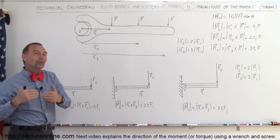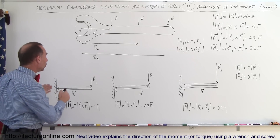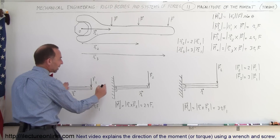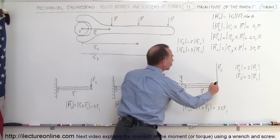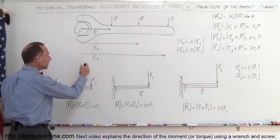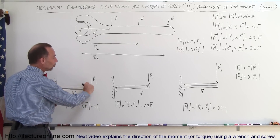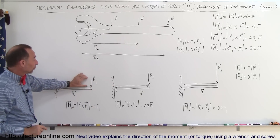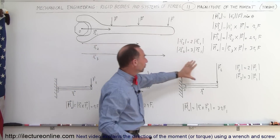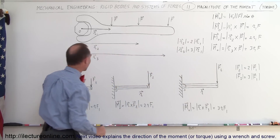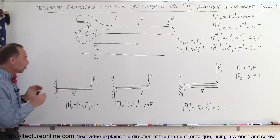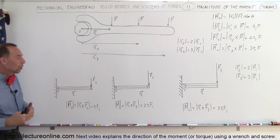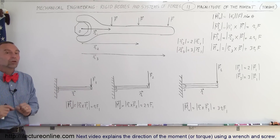Now let's talk about how the magnitude of the moment changes when we apply a greater and greater force at the very same location. In these examples, the moment arm does not change — the distance from the point of rotation to the line of action of the force does not change — and the angle in each case is 90 degrees. What does change is the magnitude of the force. The force is twice as large here, and three times as large there. So the magnitude of the moment is also proportional to the magnitude of the force.